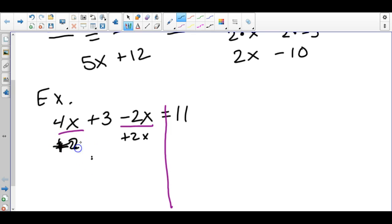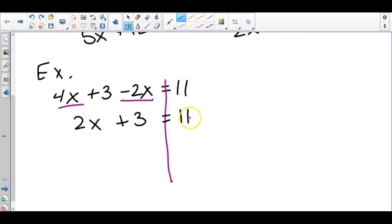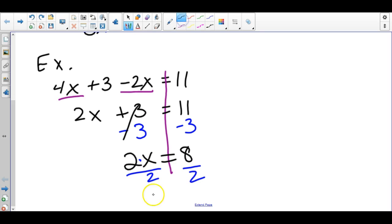We just combine them: 4x minus 2x is 2x. We bring down the 3. We also look on the right side for any like terms. There is only one number, so no like terms. Now we can start doing our opposites once everything is simplified. Remember when you do your opposites, you look for the plus or minus first. Opposite of add 3 is minus 3, and what you do to one side you do to the other. That leaves us with 2x equals 8. 11 minus 3 is 8. Then that's really 2 times x, so the opposite is division. Now we're left with x equals 4.